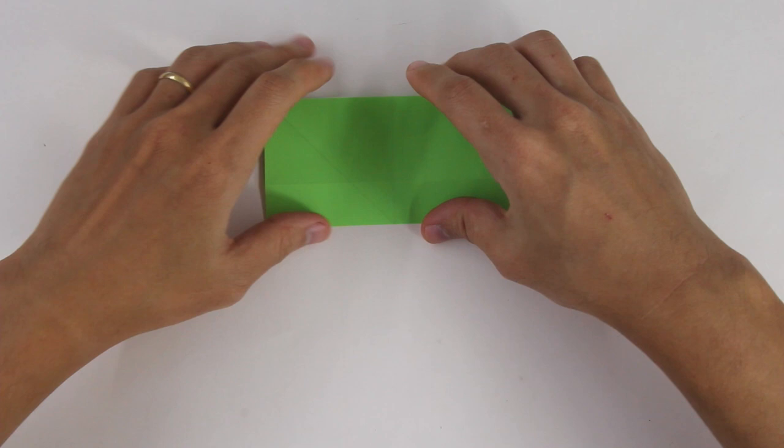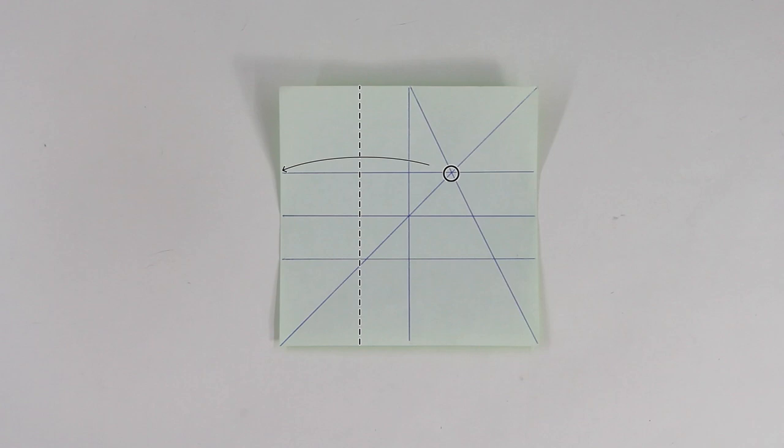Now, fold the side of the paper up to this crossing point and again unfold.